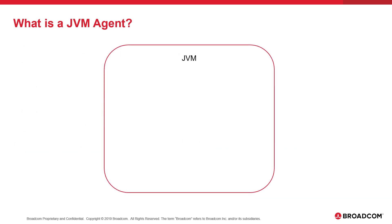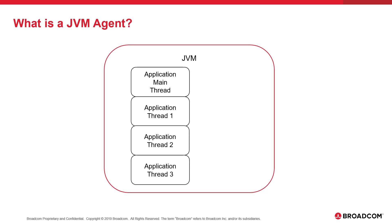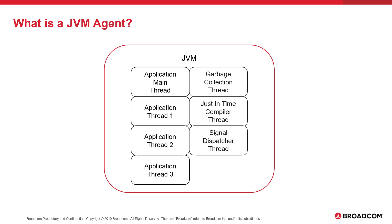Consider this diagram. The red box denotes a JVM running within a z/OS address space. Within the JVM, there can and will be several threads. The application that the JVM was requested to start will have a main entry point thread, and the application may have started several other threads to perform various work. In addition, the JVM starts its own threads that perform JVM-level functions, such as garbage collection. If the JVM was instructed to start an Agent thread, an Agent thread will also be present in the JVM.